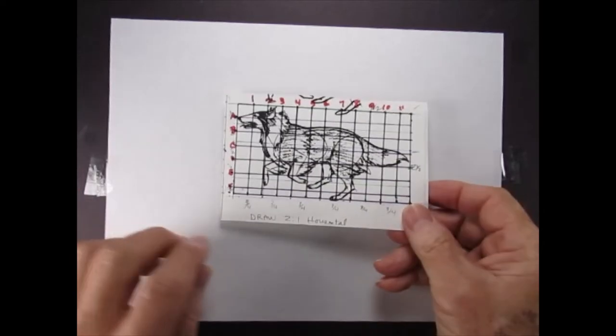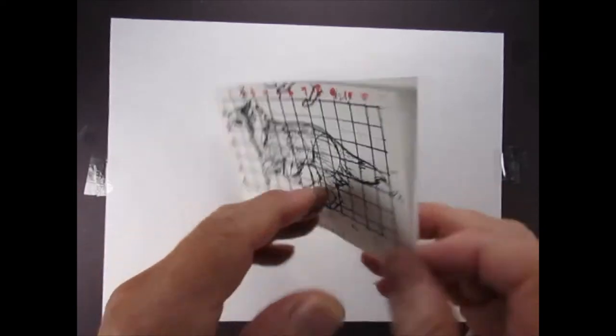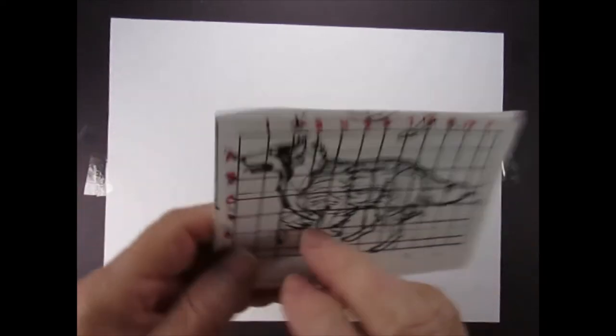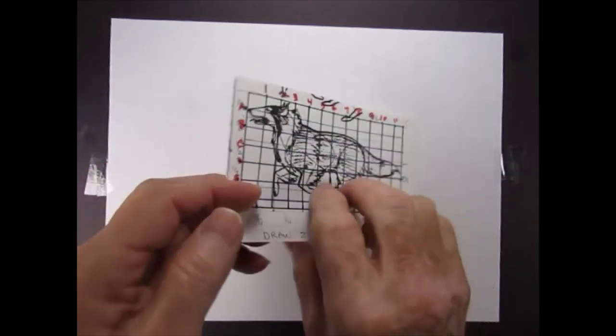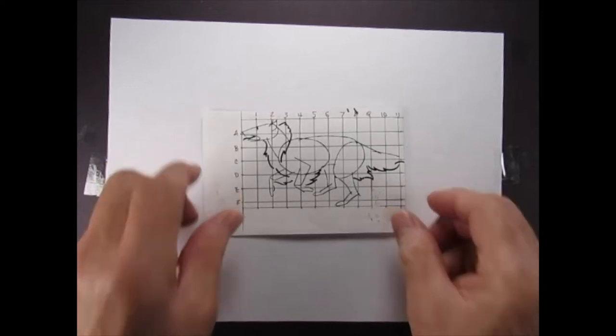Hello. Today we're going to draw a dog, a Collie, and we're going to use the grid technique to help us draw more accurately. It's going to be this one here, but I would also like for you to take your objects and imagine them as geometrical shapes, like this here.